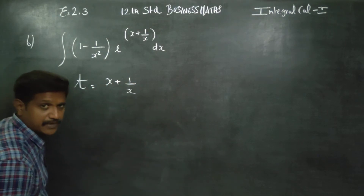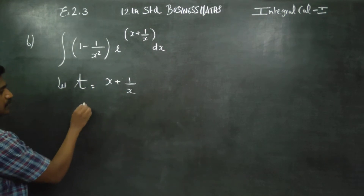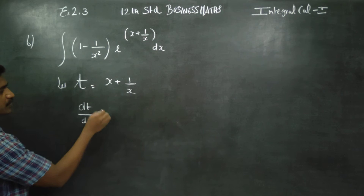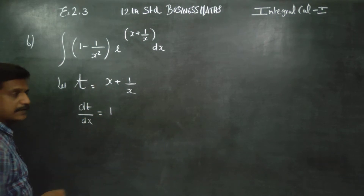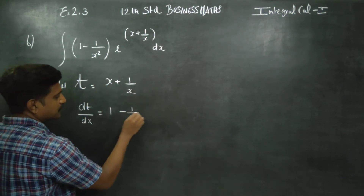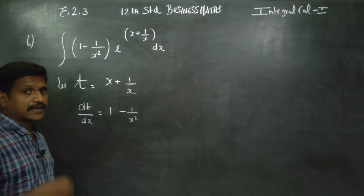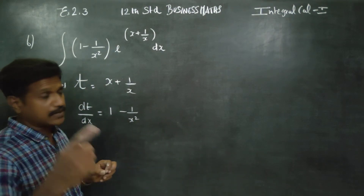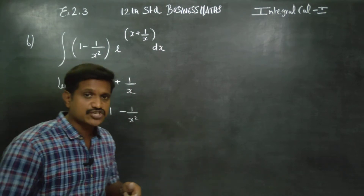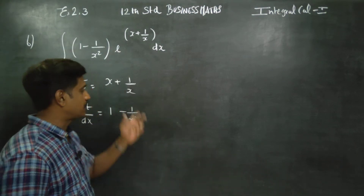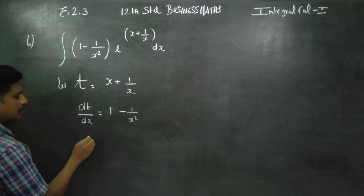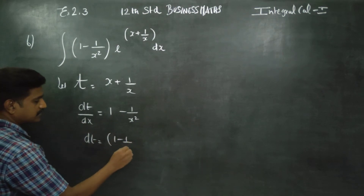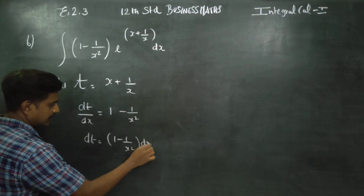Let us differentiate. dt by dx: differentiating x gives 1, and differentiating 1 by x gives minus 1 by x squared. So dt is equal to 1 minus 1 by x squared into dx, which we can write as 1 minus x squared into dx using cross multiplication.